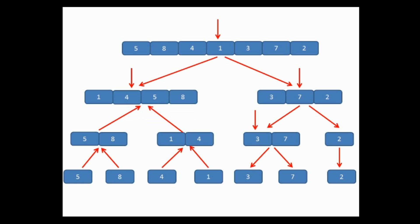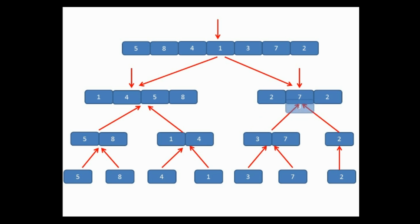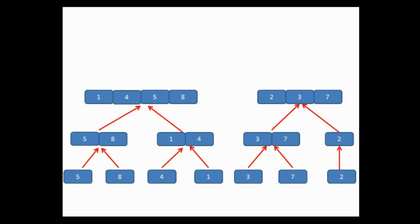On the right side we have 3 and 7, which merge to 3, 7 in the correct order. 2 is a single element and remains as is. Merging 3, 7 with 2 gives us 2, 3, 7. Now we have two sorted sublists — 1, 4, 5, 8 and 2, 3, 7 — and we need to merge them to form the final output.